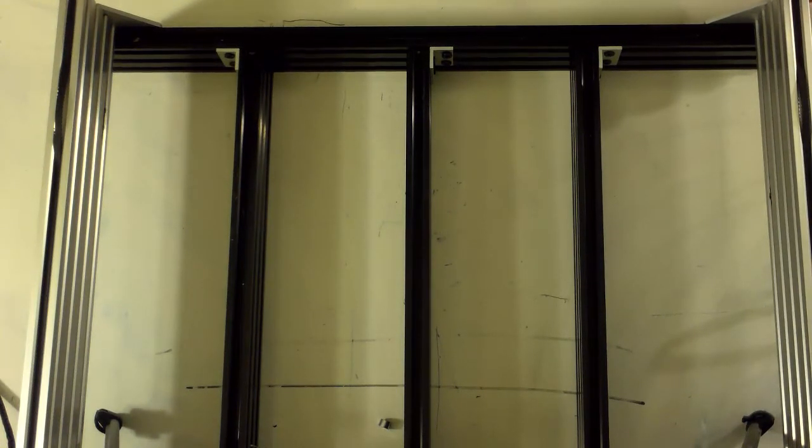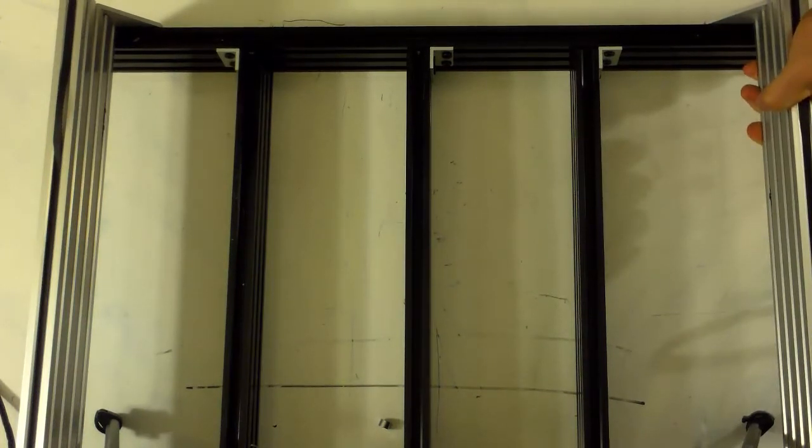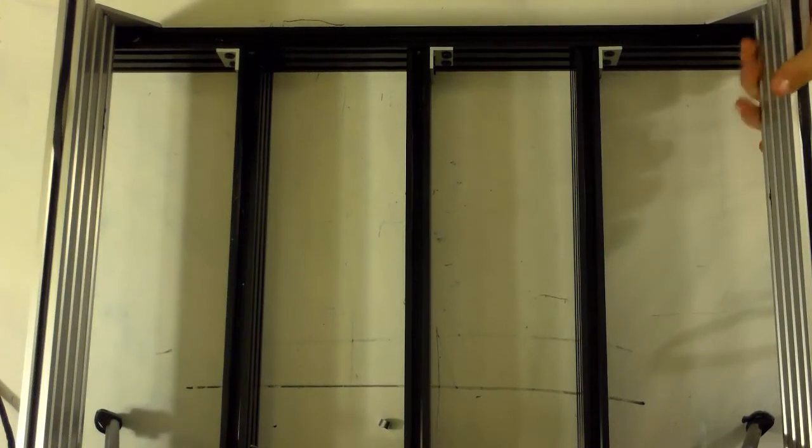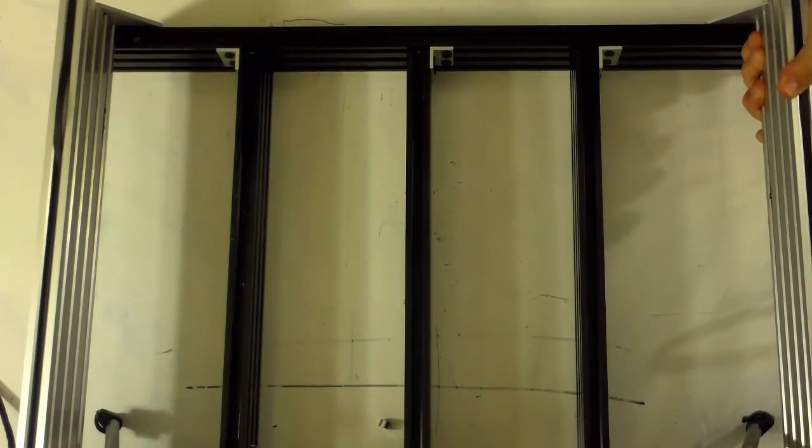And then as you bring your x-axis back and forth, that'll actually slide the 20 by 80 in and out as it's needed. And then once you've got it at a place where you're comfortable that it's not binding or rubbing, go ahead and lock down the five hole joining plate.